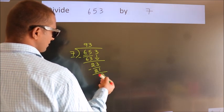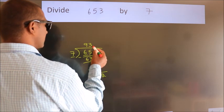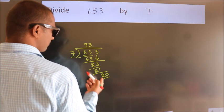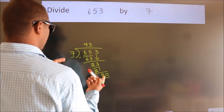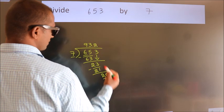After this, no more numbers to bring down. So what we do is we put dot, take 0. So 20. A number close to 20 in the 7 table is 7 twos, 14.